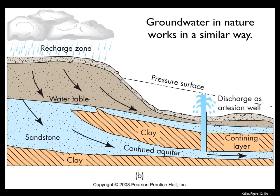Groundwater in nature works in a really similar way. You've got water in this recharge zone here where drops of water are falling onto the soil and percolating through the little holes and pore spaces and cracks in the rock and flowing along. And if there happens to be a well that you drill — where you put a pipe in the ground — that water is going to try and flow back up to the height at which it started off, minus a little bit accounting for the fact that there's friction, which is why this pressure surface has got a slope to it.